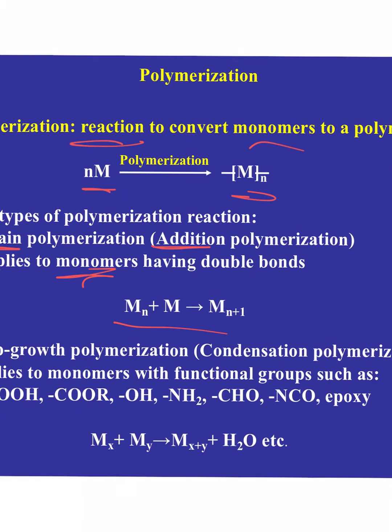We also have what's called step growth polymerization, or condensation polymerization — again, two names for the same thing. These are processes that in the end crank out something else besides the polymer: the condensate. We have these different functional groups — carboxylate, COR, OH, NH2, CHO, NCO, epoxy — and hopefully you've committed what those letters mean in terms of structural components to memory, because I'm going to assume you know what those are.